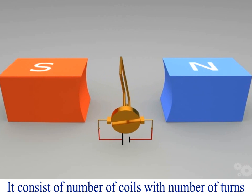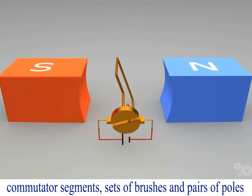It consists of a number of coils with multiple turns, commutator segments, sets of brushes, and pairs of poles.